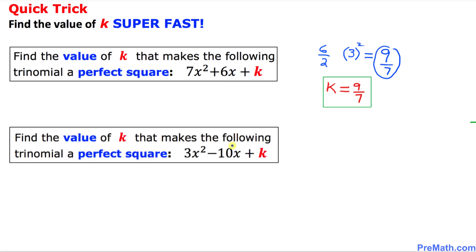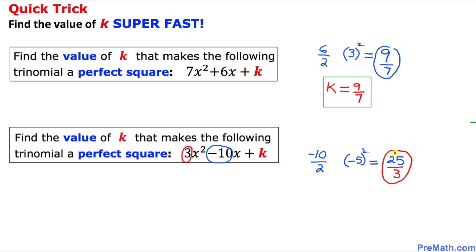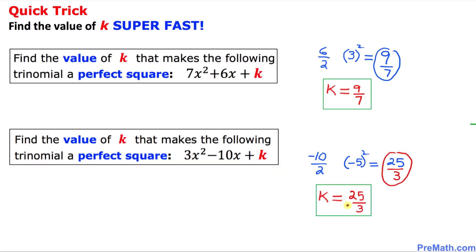Here is our next example. In this trinomial, our middle number, the coefficient of x, is negative 10. We always divide it by 2, giving us negative 5, and then we square it, giving us positive 25. Then look at the leading coefficient, which is 3. Divide 25 by 3, and that is our k value. So k turns out to be 25 over 3. That is our final answer.